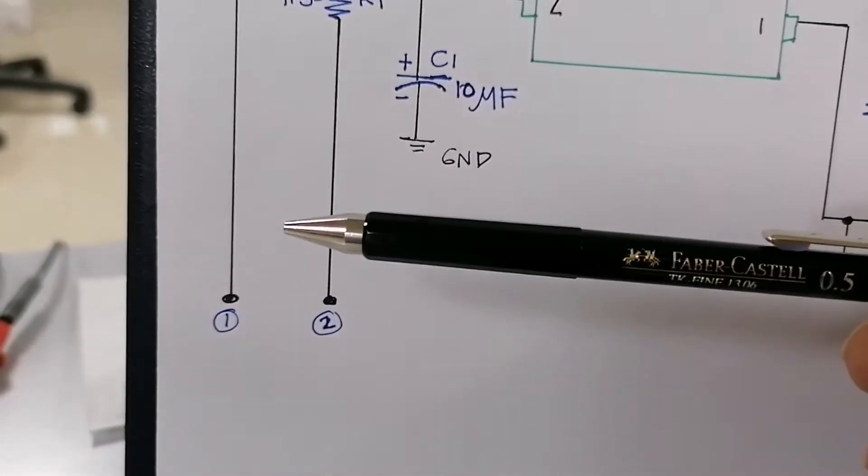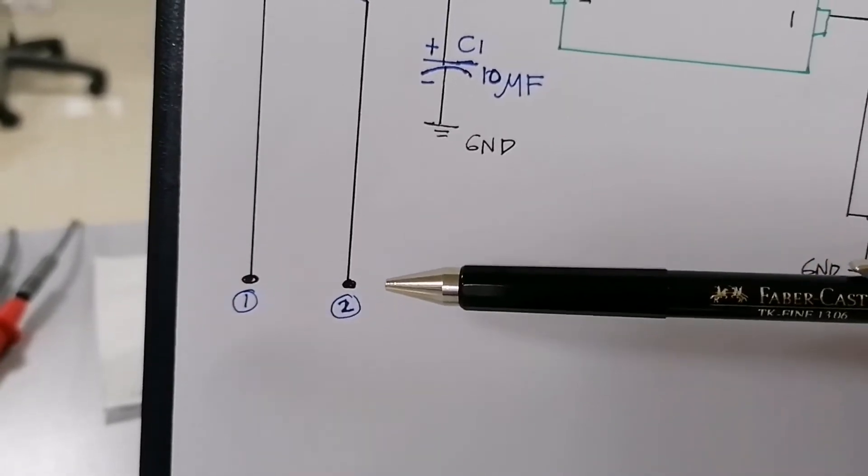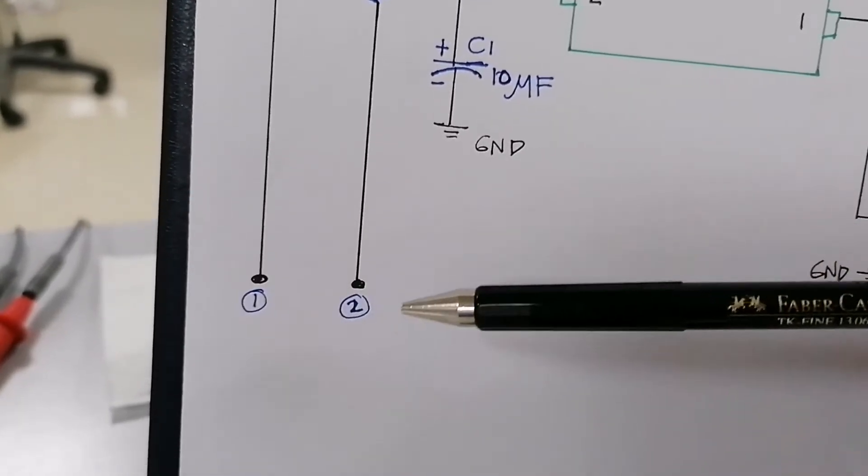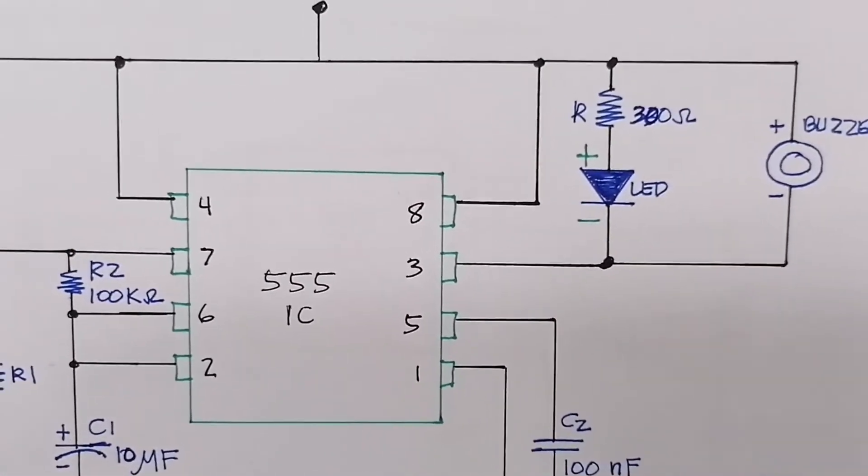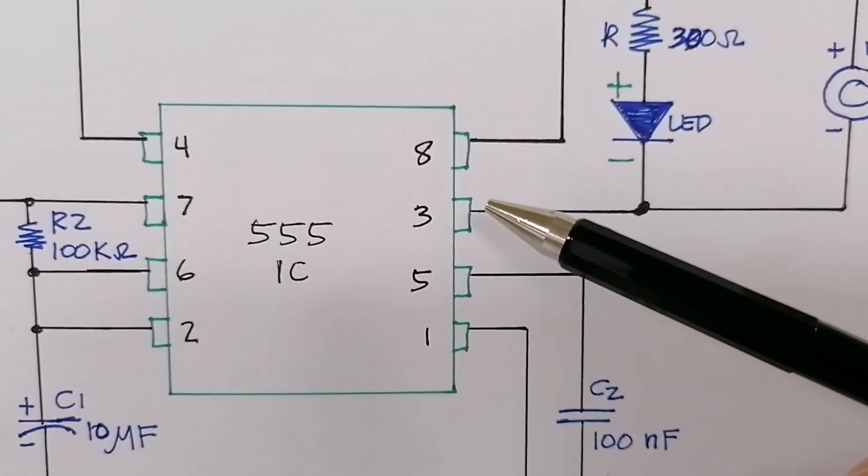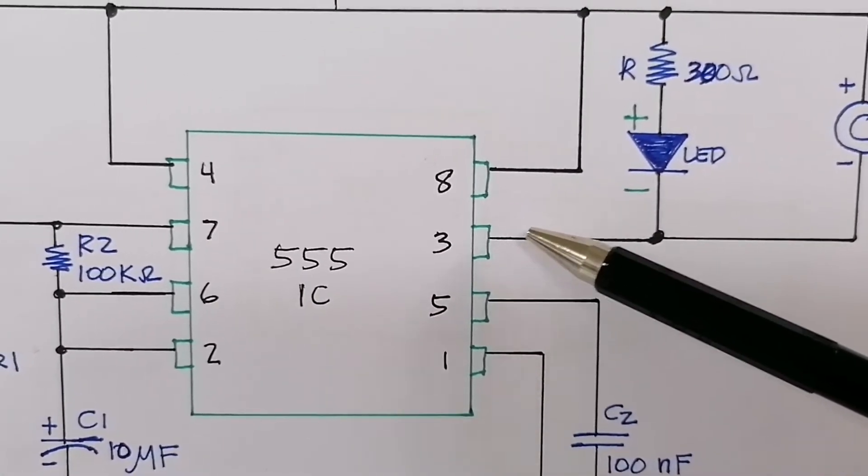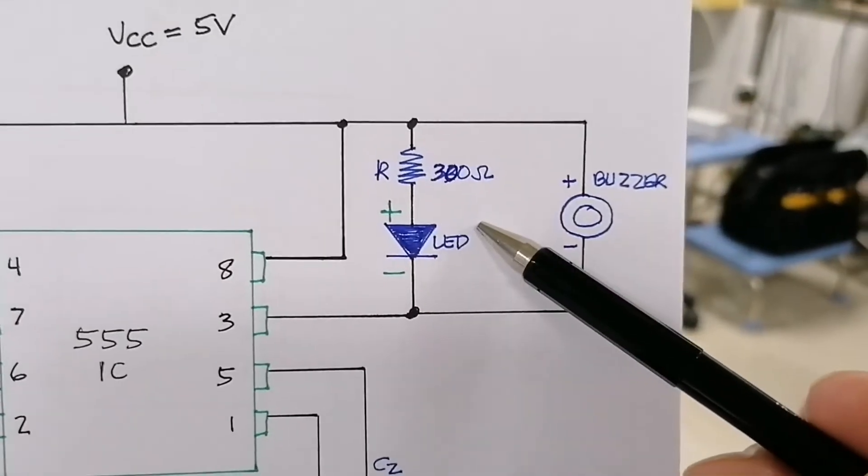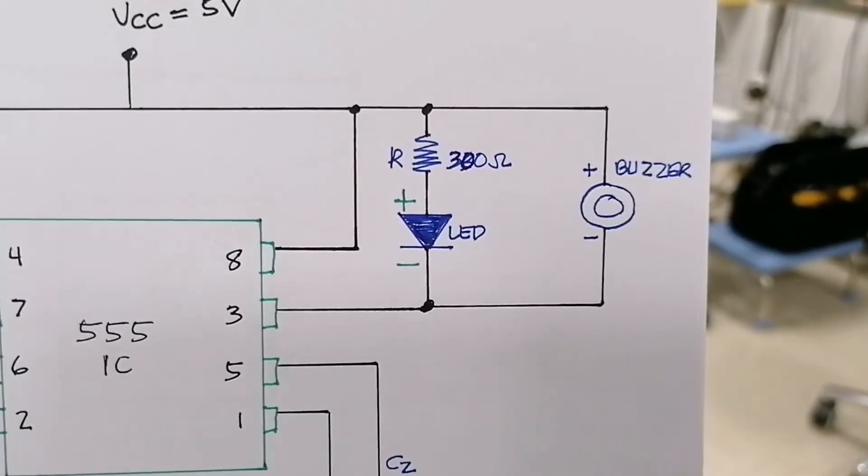However, these two electrodes are still open or not yet shorted. When these two electrodes are still open, the IC will not produce an oscillation. Therefore, the output pin 3 remains high or active. When this is active or high, your LED and buzzer remains off.